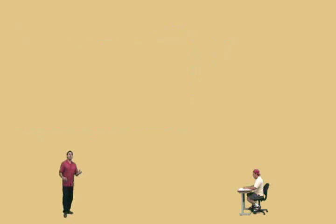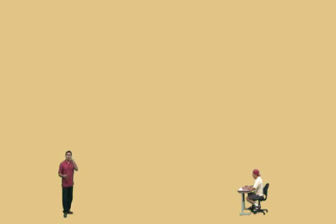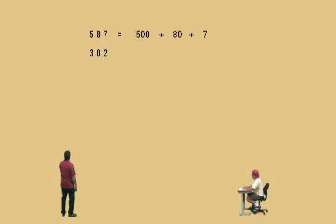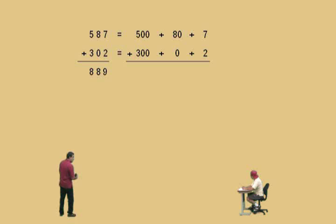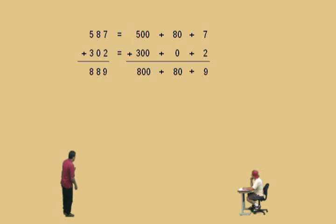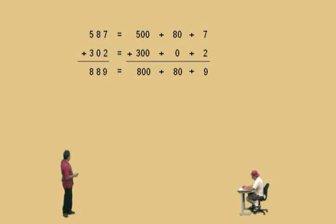Expanded form may give you a visual representation of adding numbers — large numbers together. Let's take these two numbers: five hundred-thirty-seven and three hundred-two, and write each in expanded form. When we add numbers, we normally add down the columns: seven and two is nine, eight and zero is eight, and five hundred and three hundred is eight hundred. In expanded form, we can do the same: seven plus two is nine, eighty plus zero is eighty, five hundred plus three hundred is eight hundred — giving us eight hundred and eighty-nine. We'll deal more with adding numbers like this later in the semester.